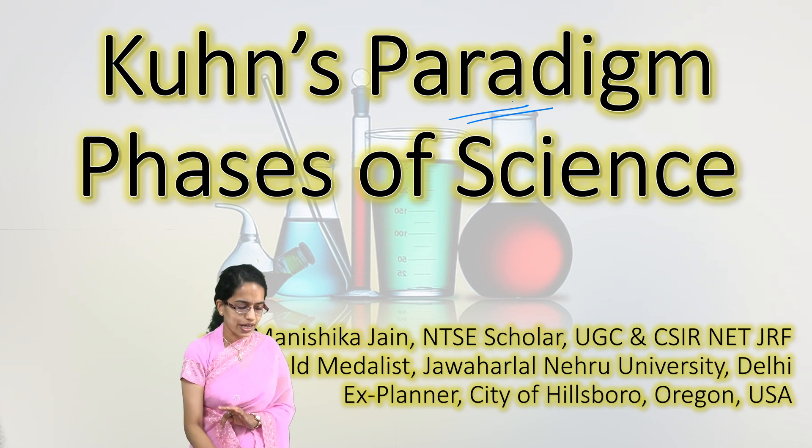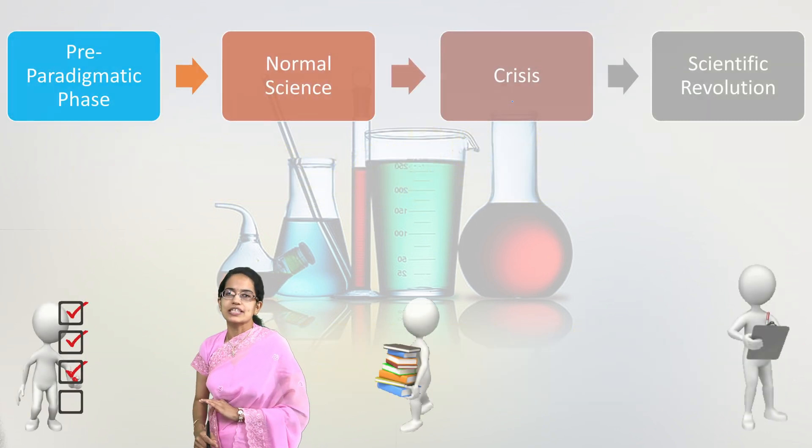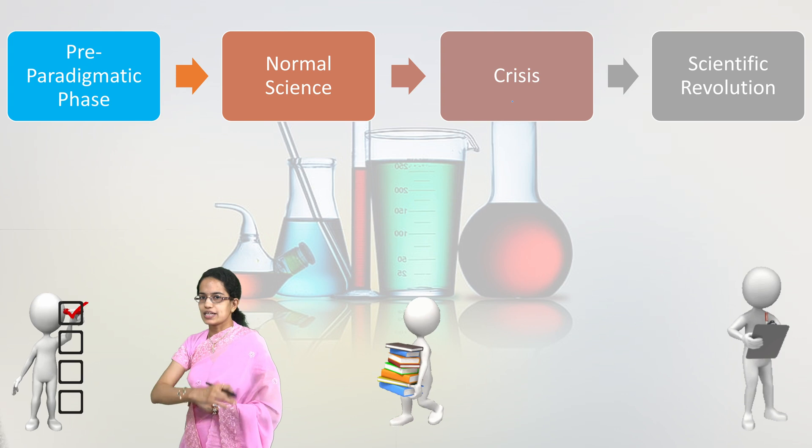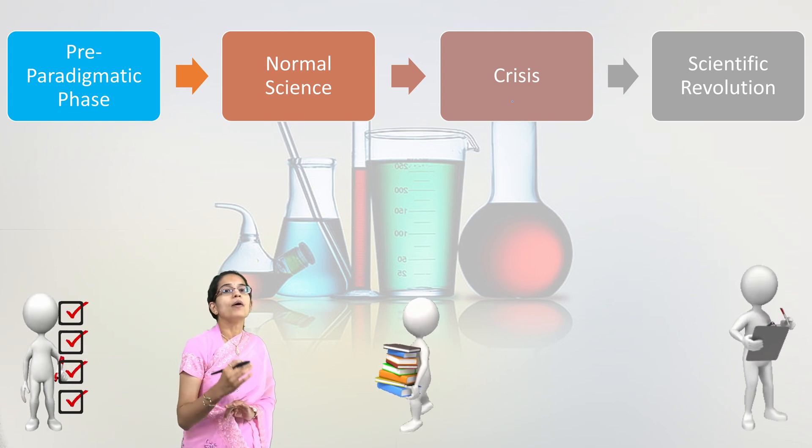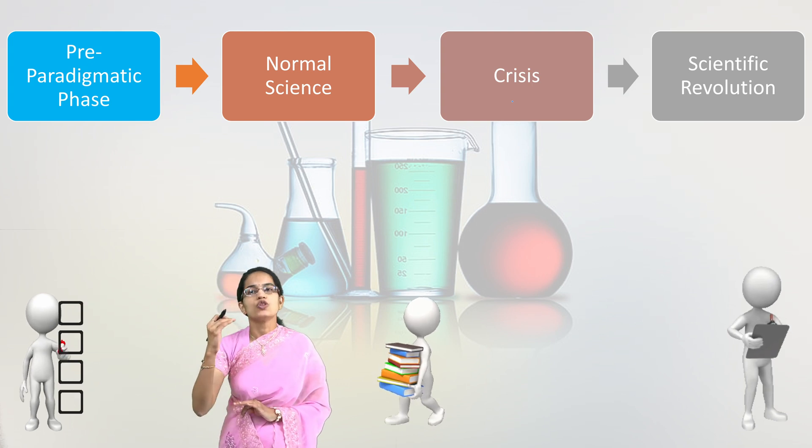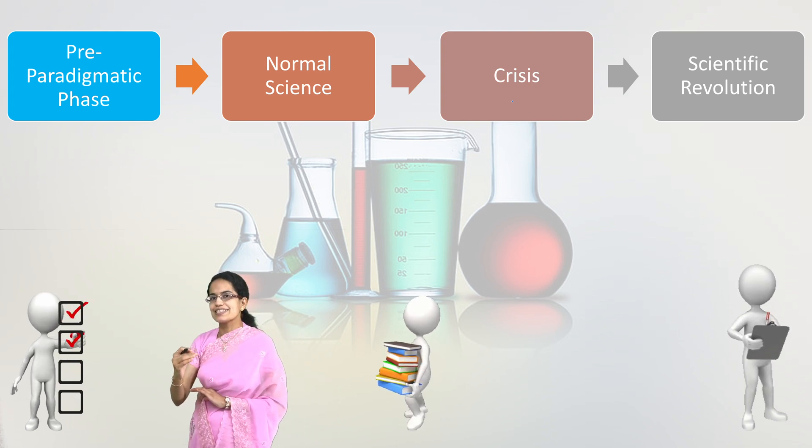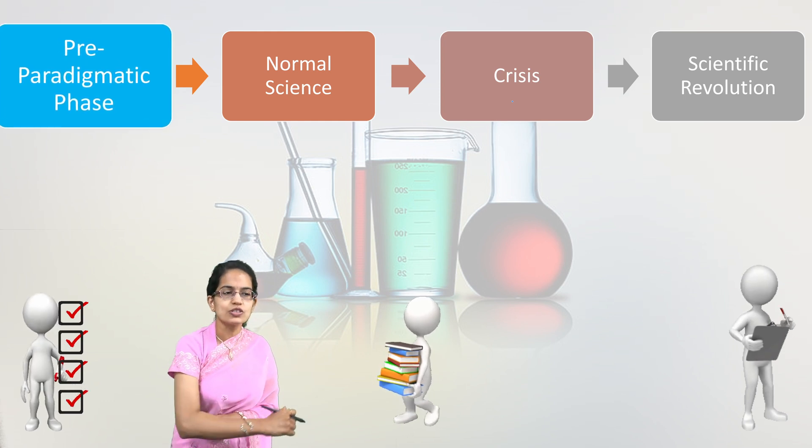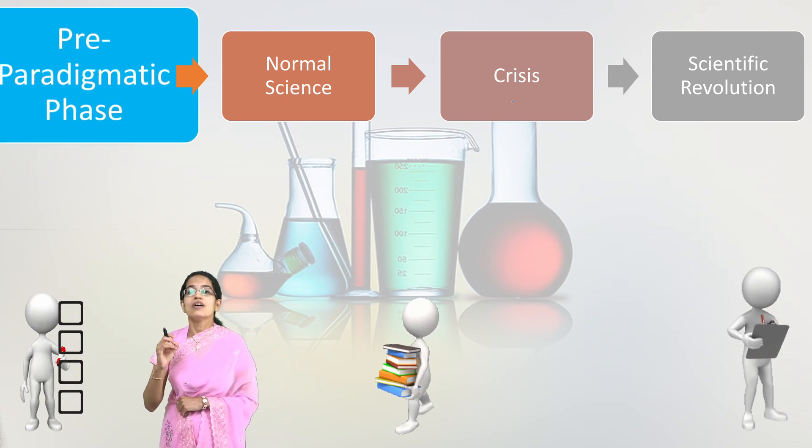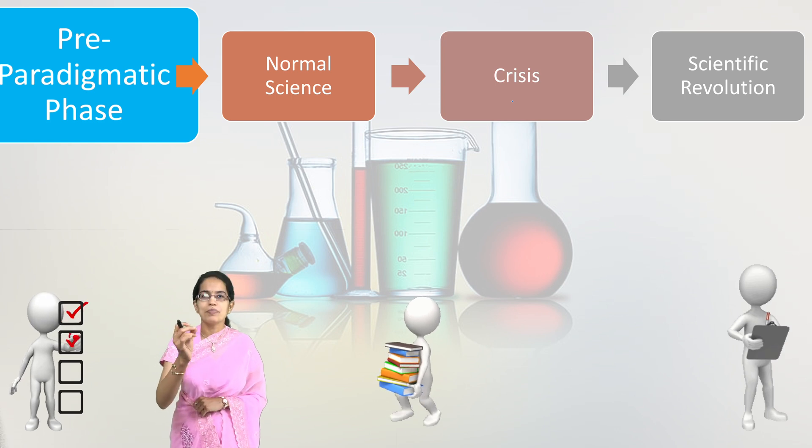So he explained four phases under which science actually develops. Let's talk about these four phases which are pre-paradigmatic phase, normal science, crisis, and scientific revolution one by one. So let's focus on the very first phase. What is that? It is pre-paradigmatic.